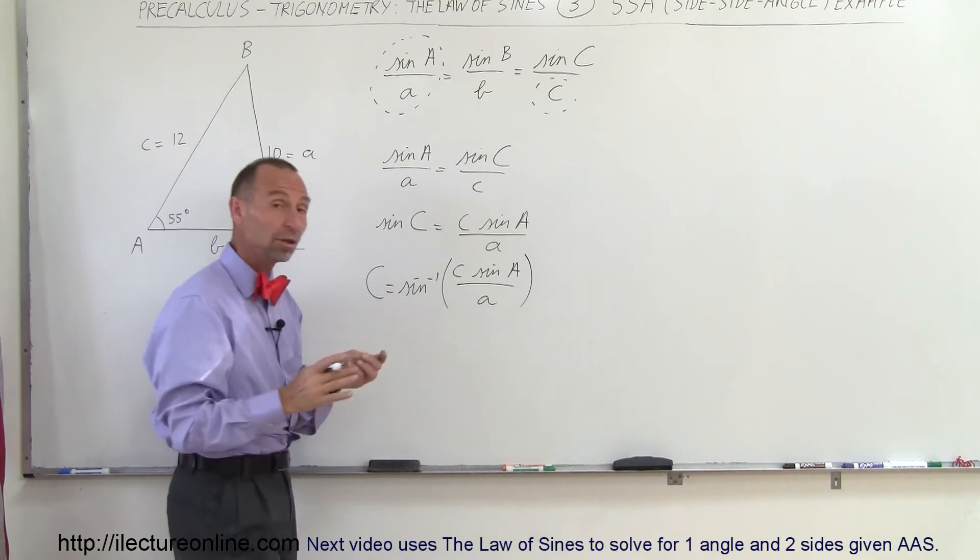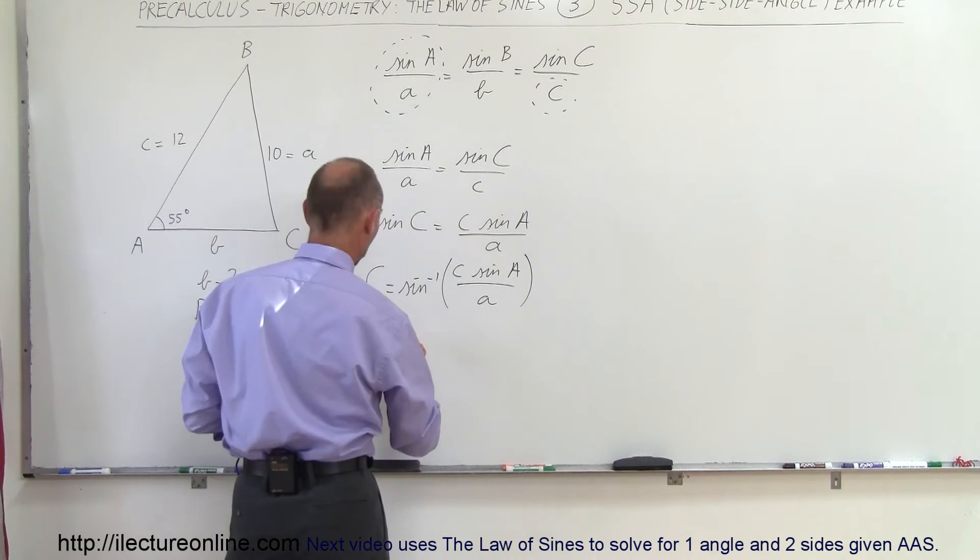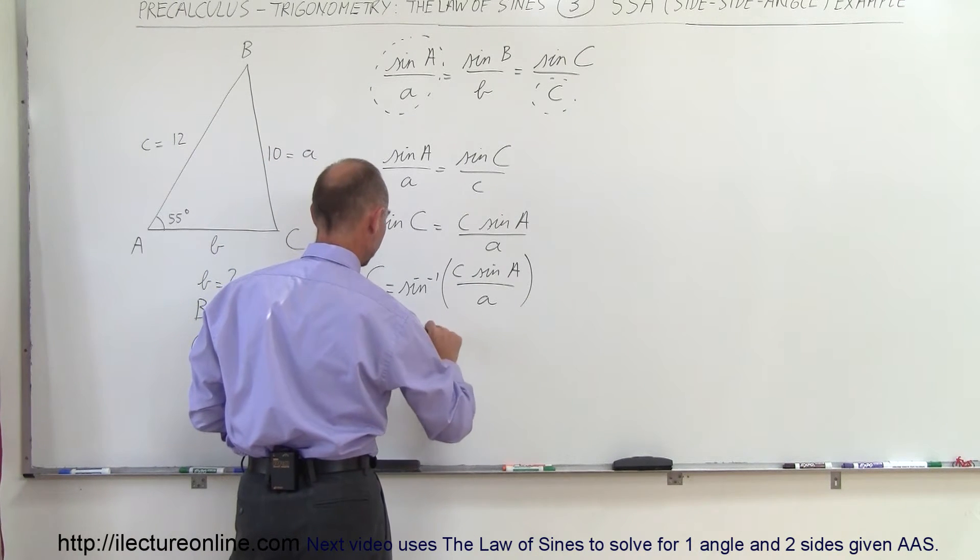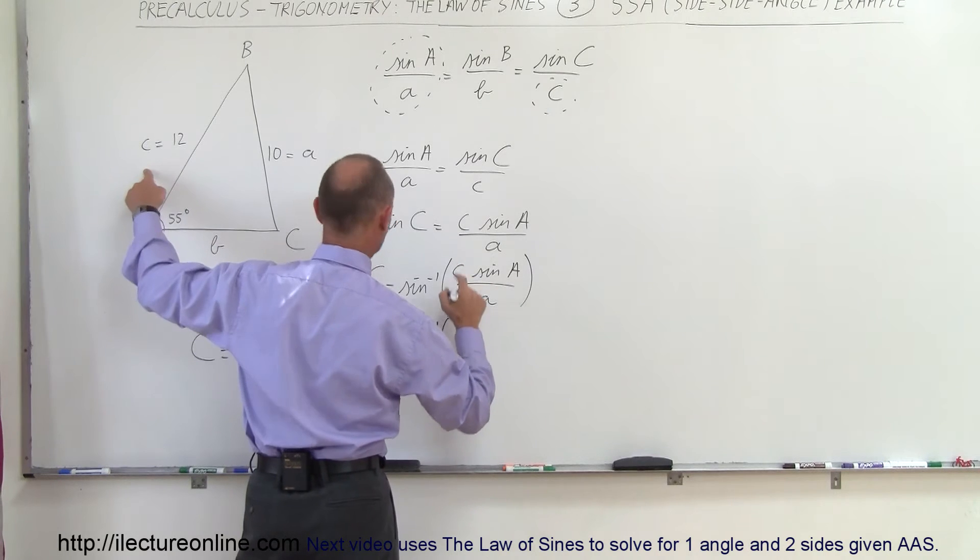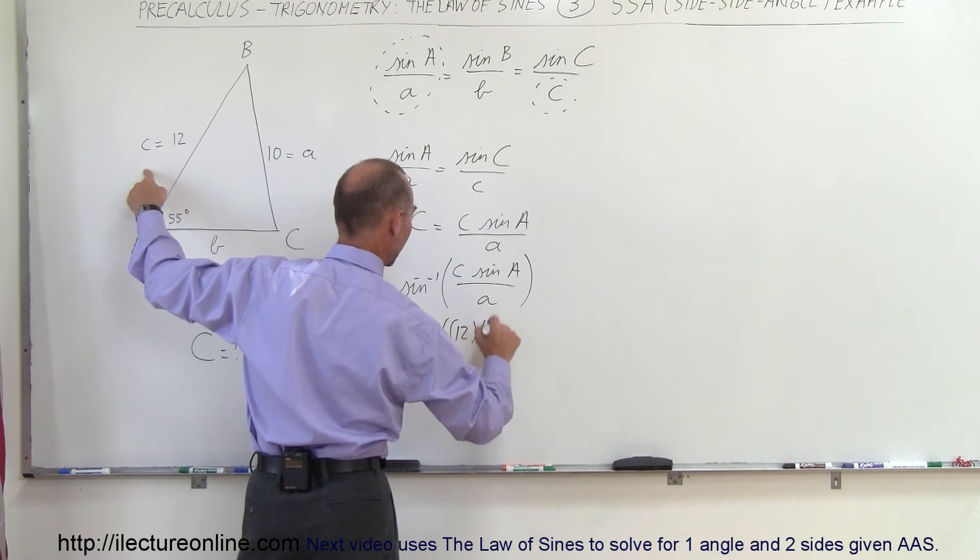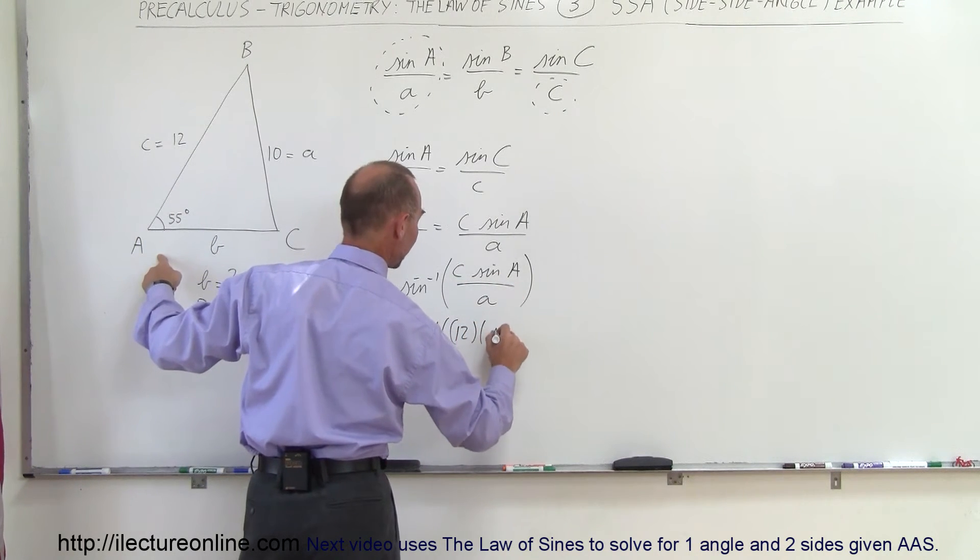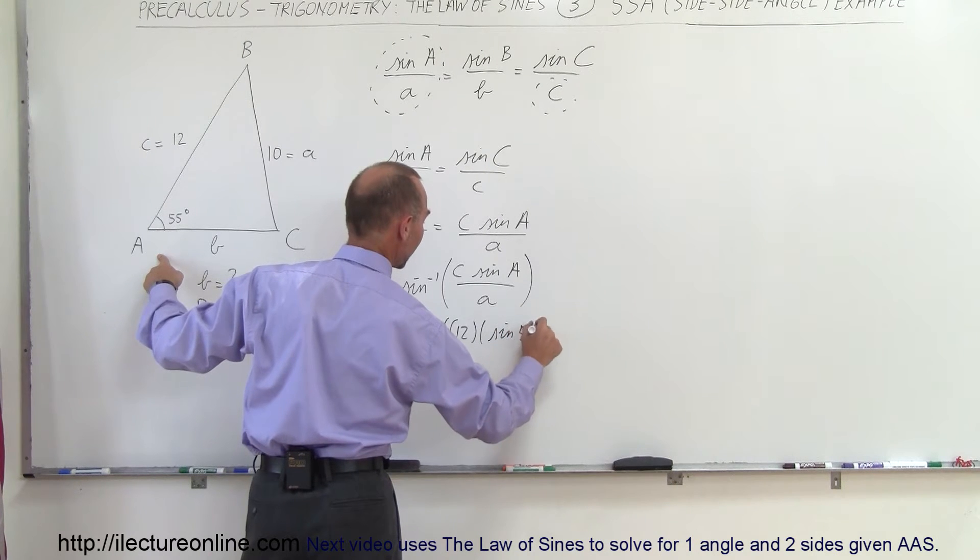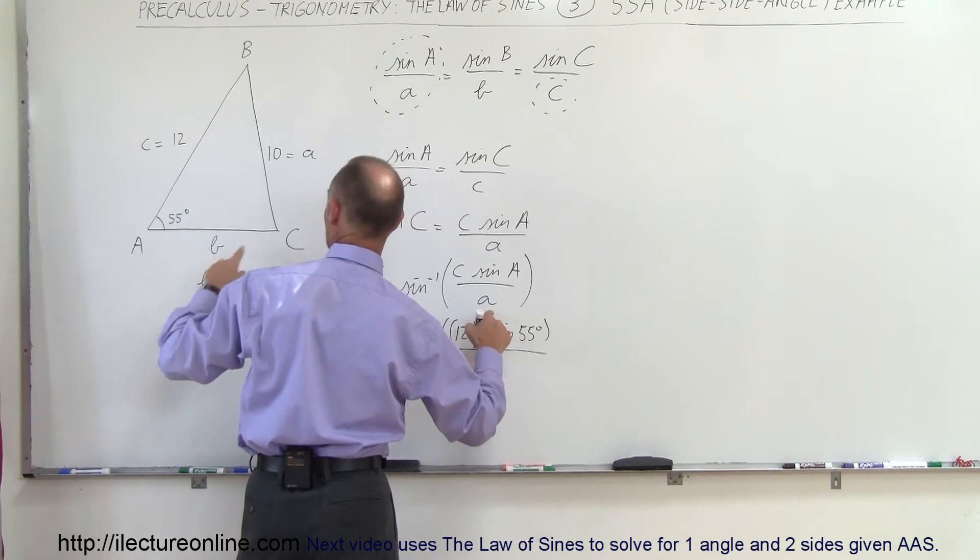Now all we have to do here is plug in the numbers and take the arcsine of that. So this is equal to the arcsine of side C is 12, sine of A, that would be the sine of 55 degrees, and divide the whole thing by A which is 10.